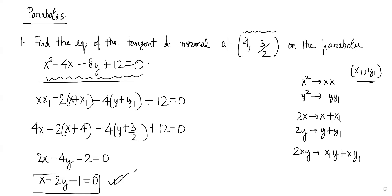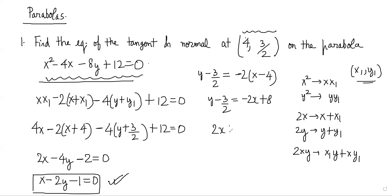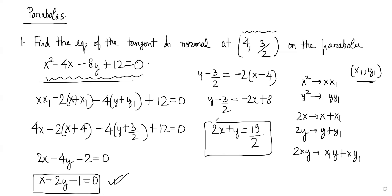Once we have the equation of the tangent, the normal will be perpendicular to this. The slope of the tangent is 1/2, so the slope of the normal will be -2. The equation of the normal is y - 3/2 = -2(x - 4), which gives y - 3/2 = -2x + 8, so 2x + y = 19/2. This comes from the last class.